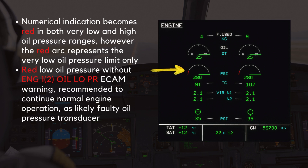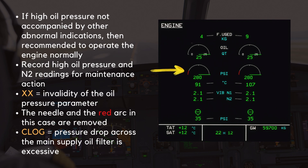A red low oil pressure indication can appear on the engine SD page without triggering the engine oil low pressure ECAM warning. In this case, it is recommended to continue normal engine operation, as it is likely that the oil pressure transducer is faulty. If a high oil pressure is not accompanied by other abnormal indications, then it is recommended to operate the engine normally for the remainder of the flight. In this case, record the high oil pressure readings alongside the corresponding N2 readings for maintenance action. In case of invalidity of the oil pressure parameter, the digits are replaced by two amber crosses and the needle and red arc are removed. An amber clog indication appears under the oil pressure indication when the pressure drop across the main supply oil filter is excessive.